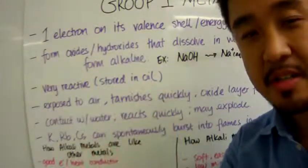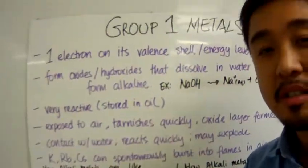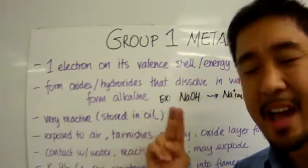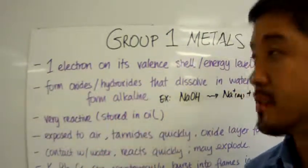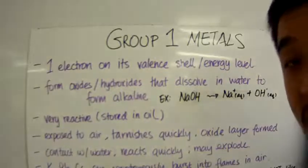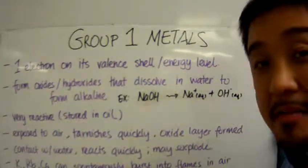First part of a three-part series, we're going to talk about group 1 alkali metals. Group 1 metals are also known as alkali metals.